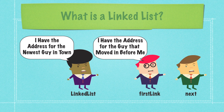That guy is going to be named first link, and he is going to be saved inside of a field inside of linked list. First link is just a link and he has the address for the guy that moved in before him. He doesn't know about any of the other links. The guy that moved in before him is going to be named next, and then next is going to have another reference to the guy that moved in before him, and so forth and so on. So if the linked list class wants to get a hold of next, he needs to contact first link and ask for the address of the guy that moved into town before it.